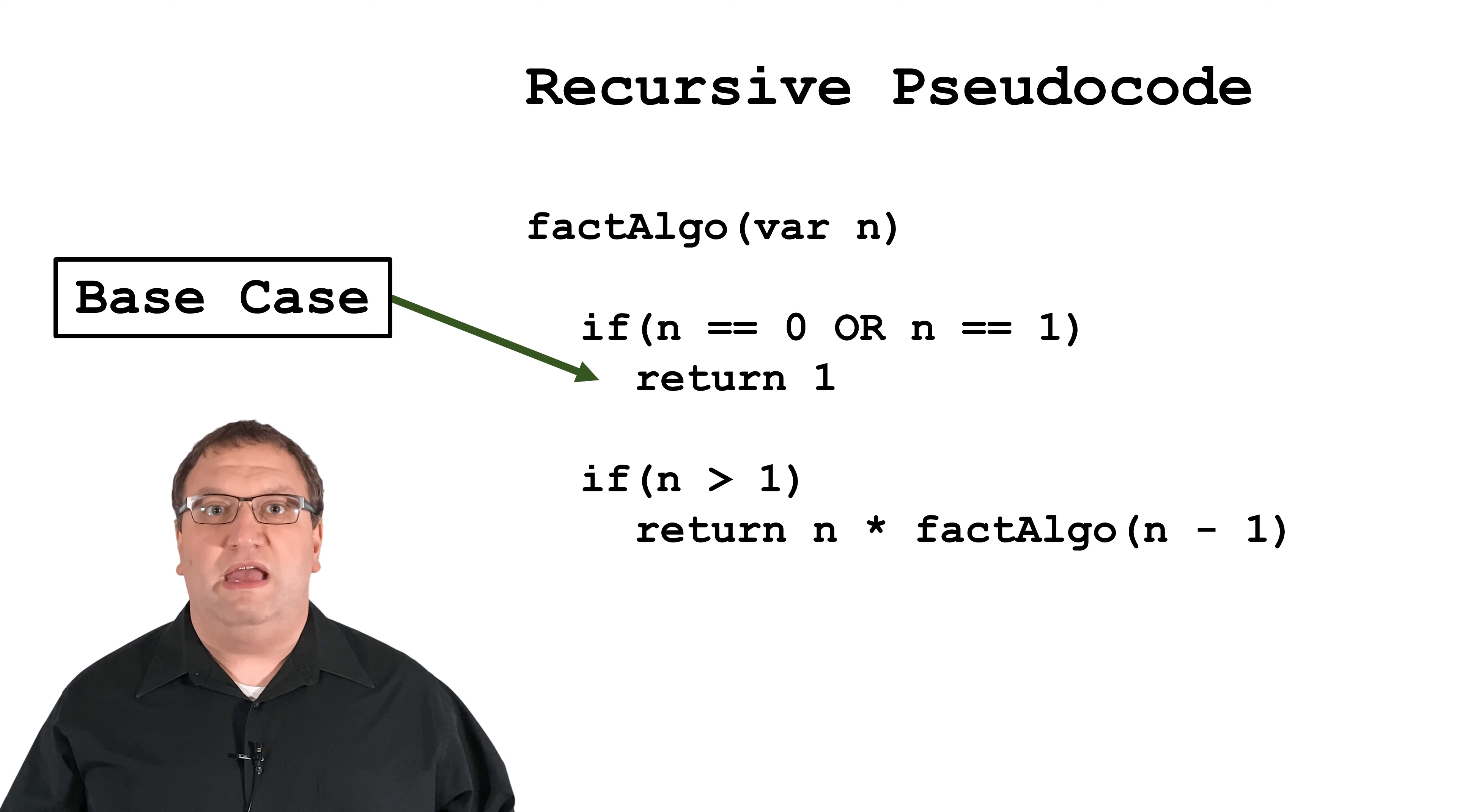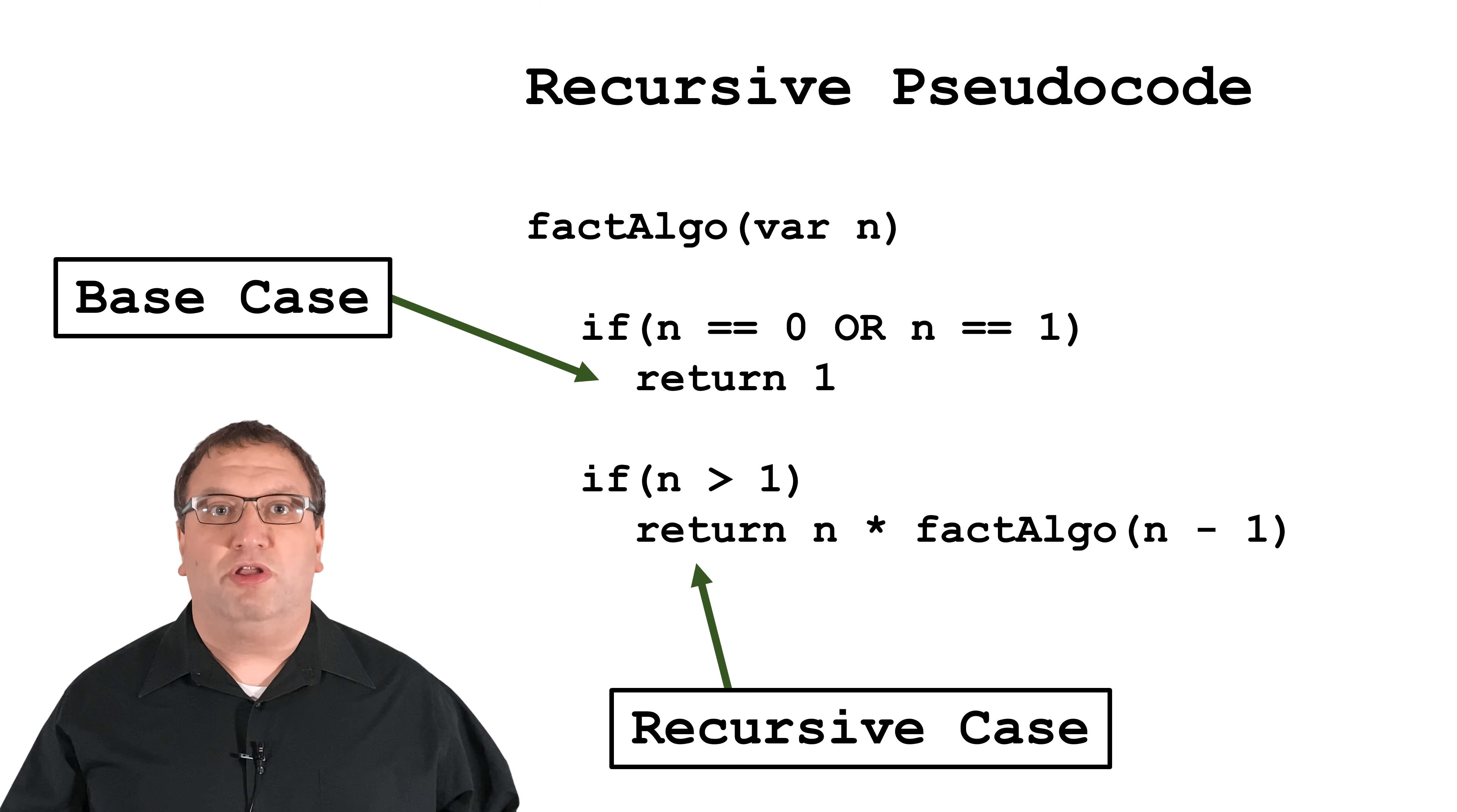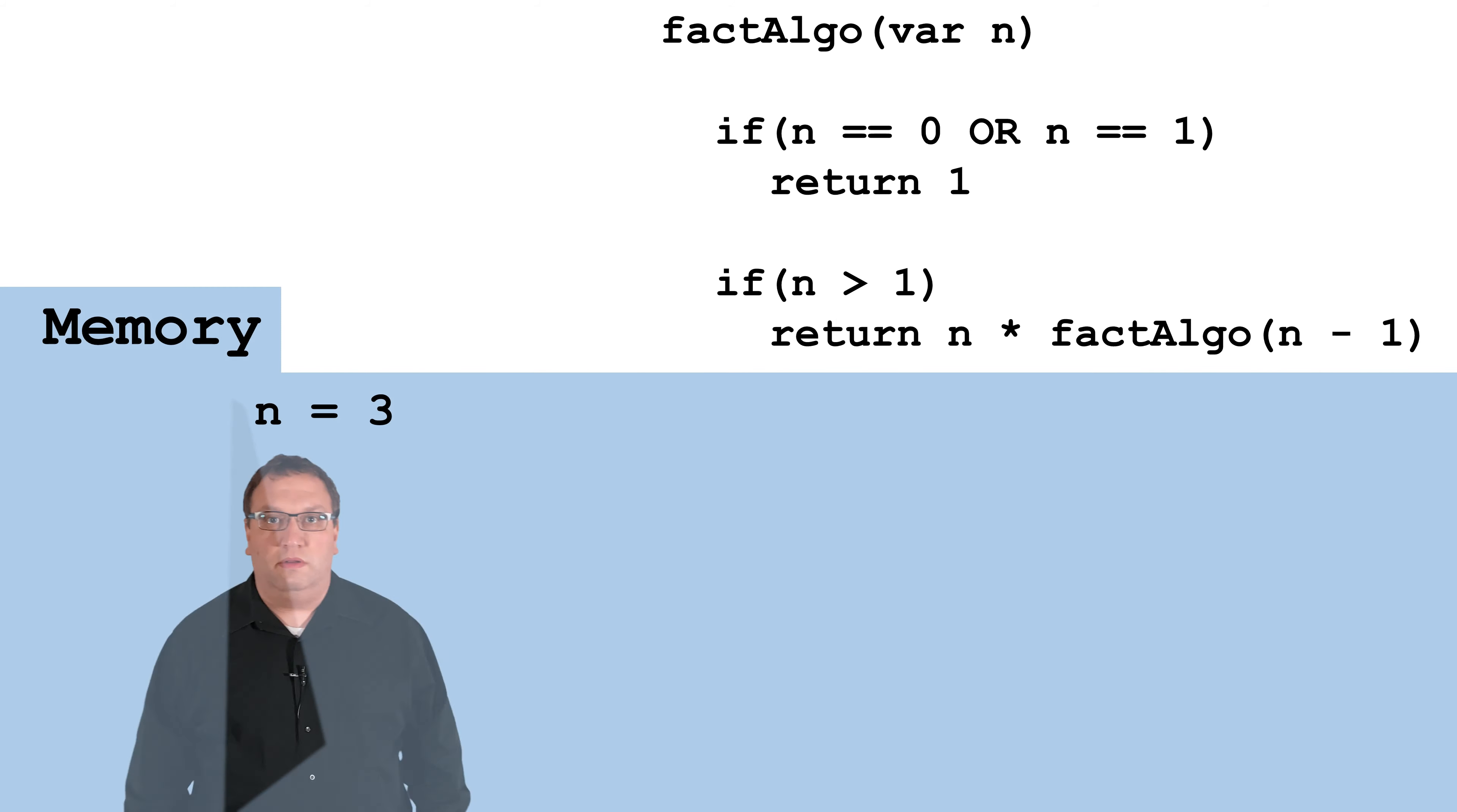Let's write this out in pseudocode. I've got the method fact-algo that takes in a parameter n. If n is 0 or 1, then we hit the base case and just return 1. If n is greater than 1, we multiply n times the factorial of n minus 1. We calculate the factorial of n minus 1 by calling fact-algo again.